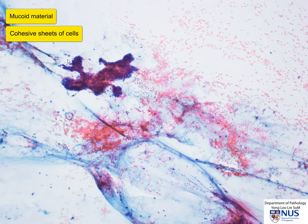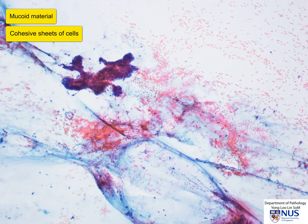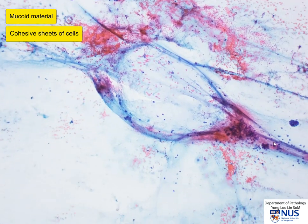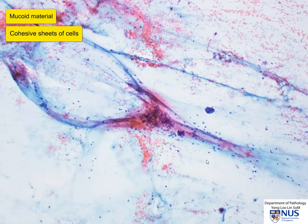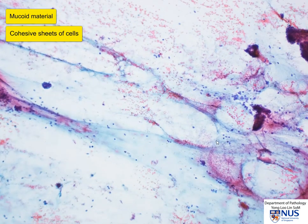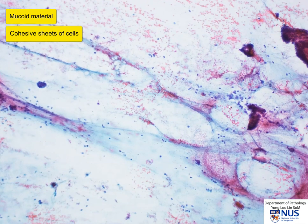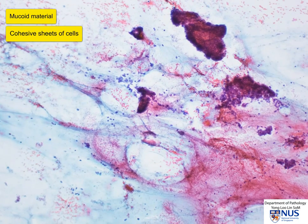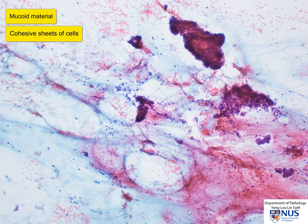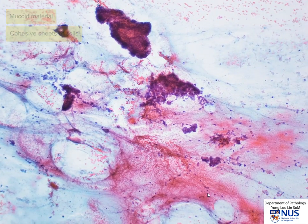Coming on to slightly higher magnification, we can see some branching and cohesive sheets of glandular cells, and at the same time some streaks of mucin in the background. There are also occasional single nuclei, and this area is a little bit more cellular.